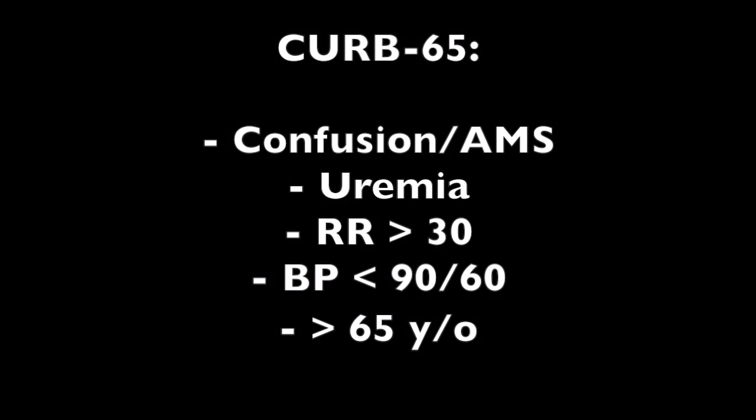Seen here is the mnemonic CURB-65. One point is assigned for each criterion that is met. Up-to-date authors generally favor hospital admission for patients with a score of one or two, although patients with a score of one due to being greater than 65 years of age who do not have major comorbidities do not necessarily require admission. For patients with a score of three to five, hospitalization is indicated, and the patient should be assessed for possible ICU admission, especially if the score is four or five.